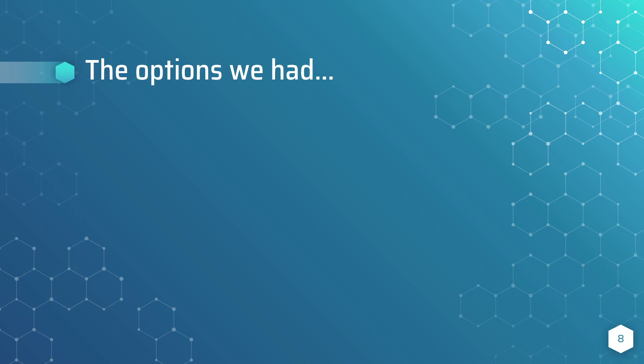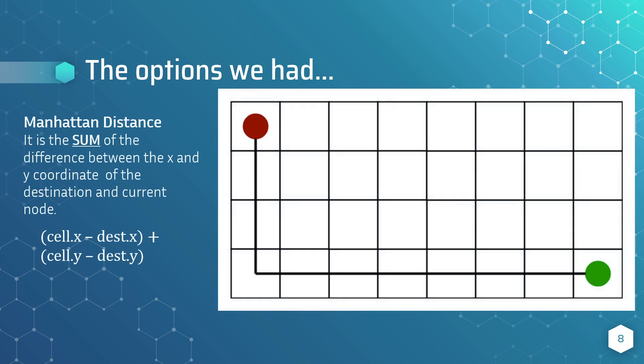I will start off with the Manhattan distance. The Manhattan distance is the sum of the difference between the x and y coordinates of the destination and current node, with the formula as follows. This method is usually used when the robot can only move in four directions: forwards, backwards, left, and right.